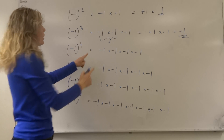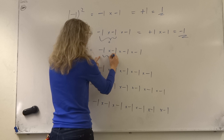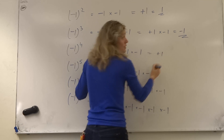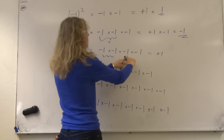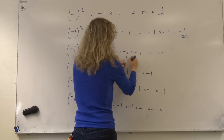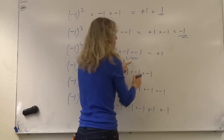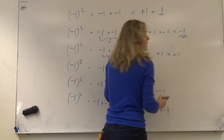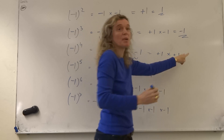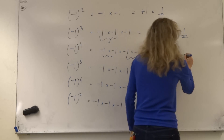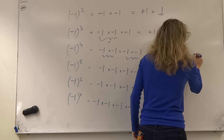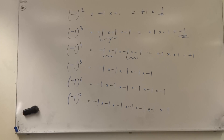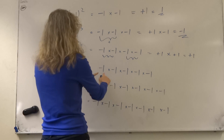What about minus one to the power four? Minus one times minus one gives us plus one, and minus one times minus one gives us plus one, so we get plus one times plus one, which gives us plus one. You're starting to see the trend now.